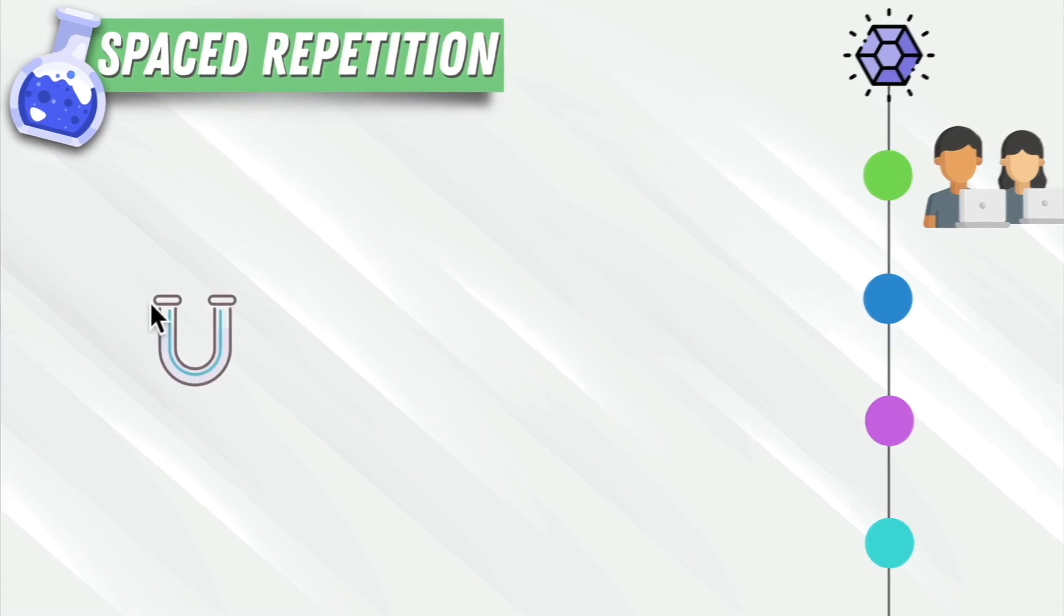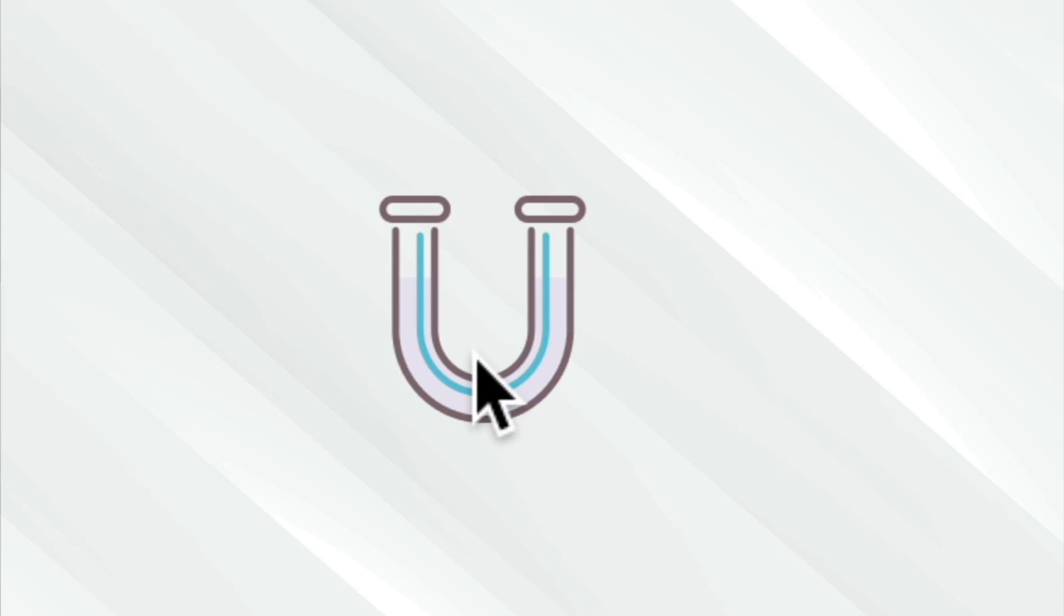For example, if this was a graph of our learning, we learn something and then as time passes we start to forget it. But then we do spaced repetition - we spend another day remembering and practicing that skill, which improves our learning.